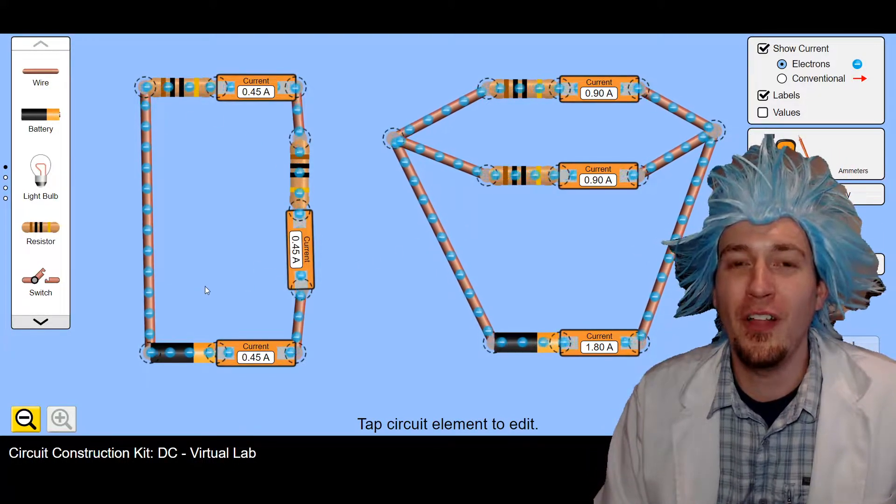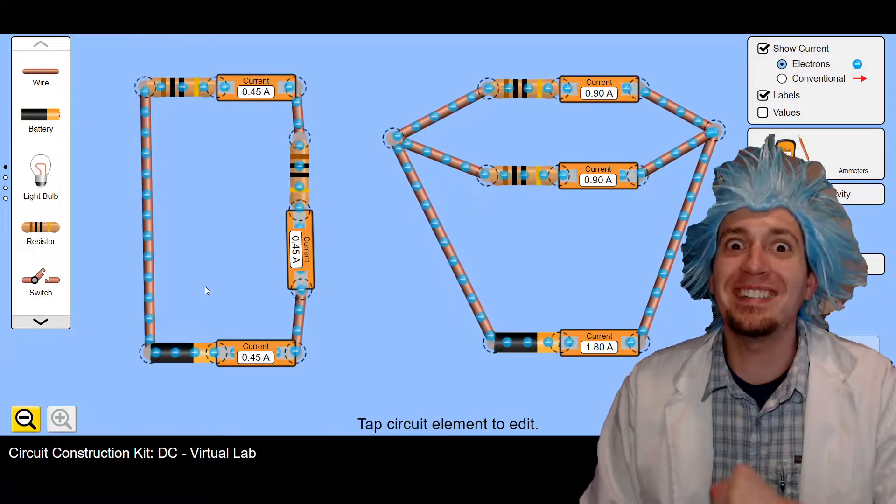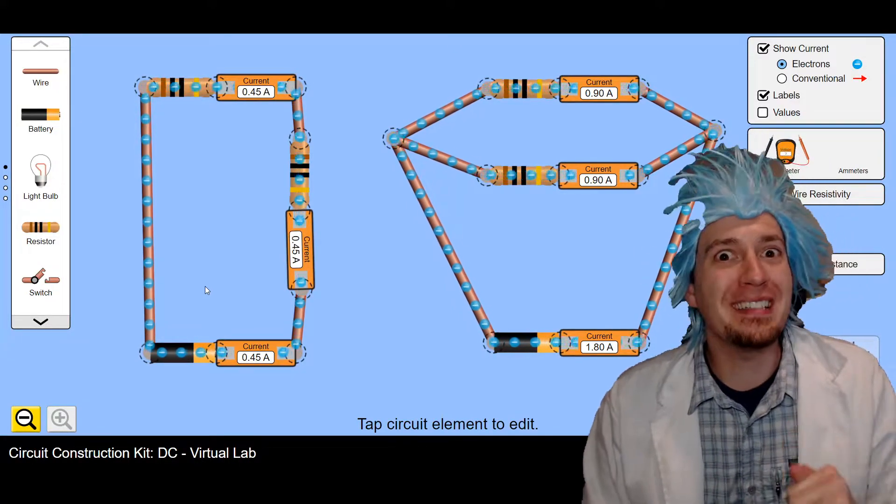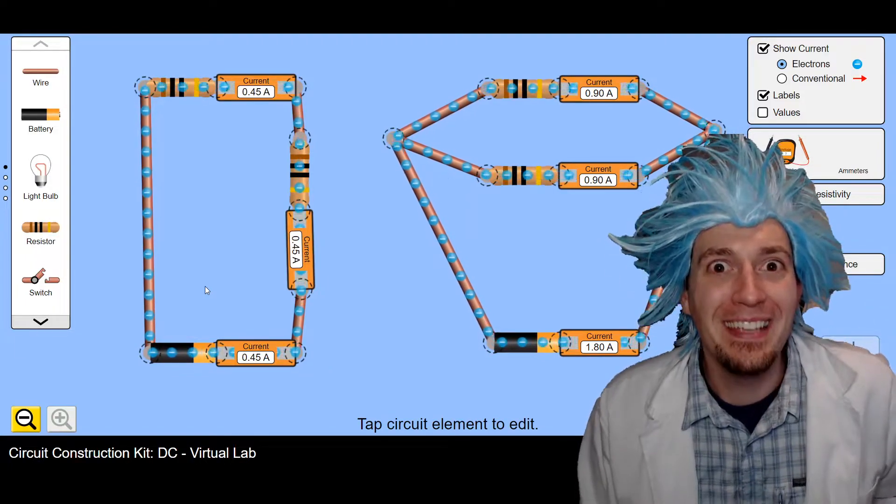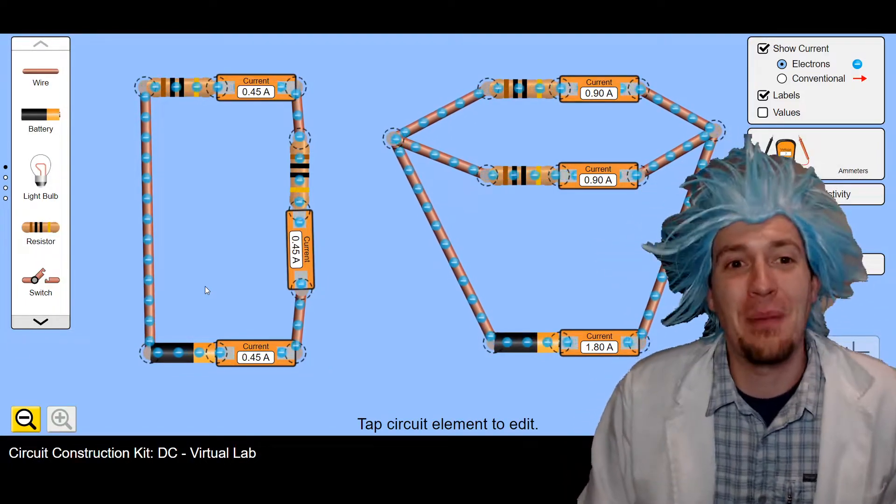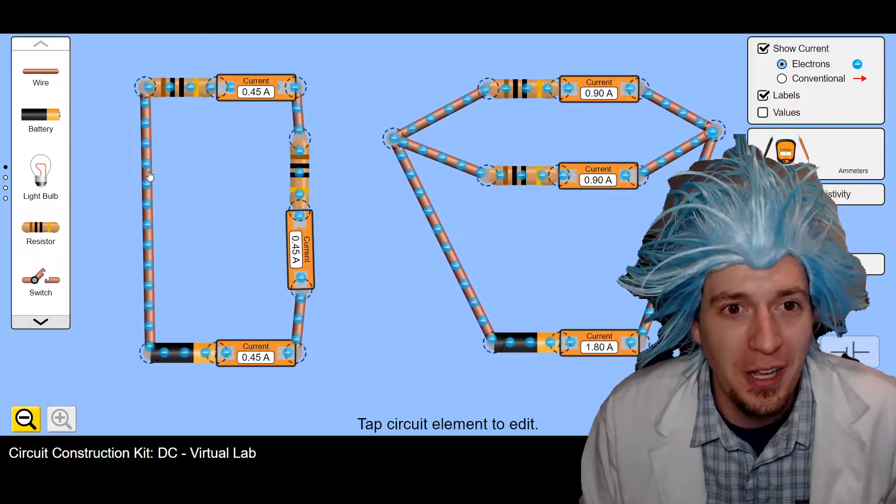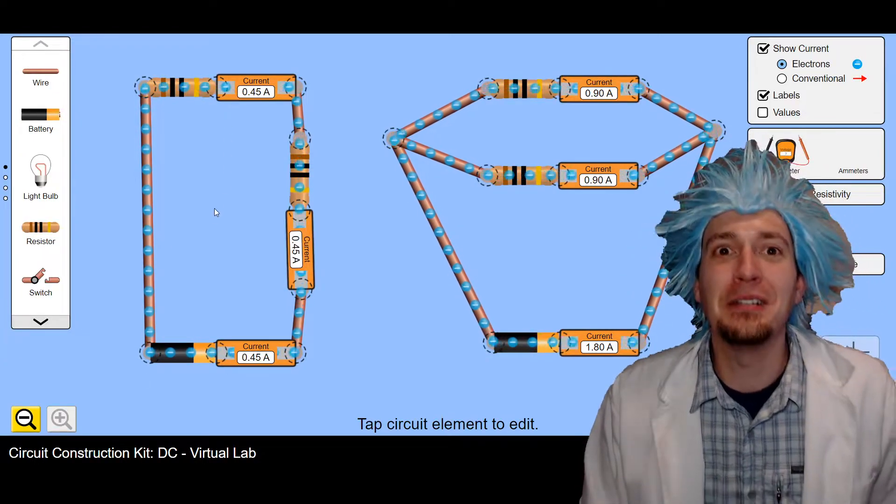Now this first circuit here on the left side, we call that a series circuit. Series circuit, single path. And you can see if we watch our electrons, they can take one singular path here.